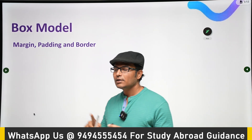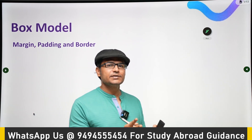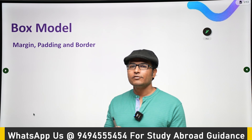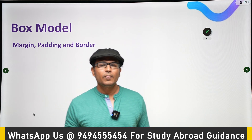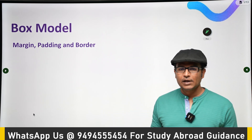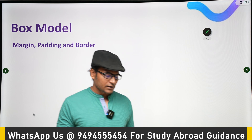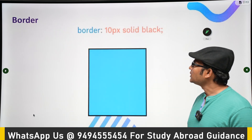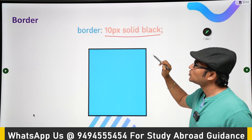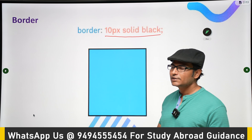In HTML, every element has its own box — every content is present inside a box. For example, h1 will get its own box, and paragraph p will get its own box. We don't see these boxes on pages because the border is not visible by default. If you write border equal to 10 pixel solid black for an element, it will create a visible box of 10 pixels.